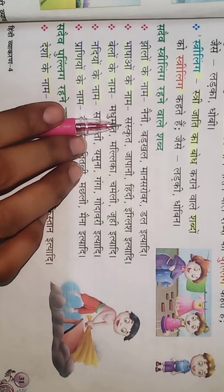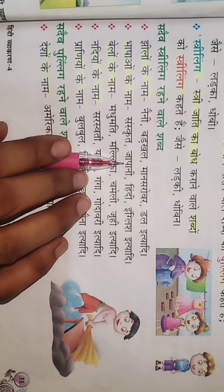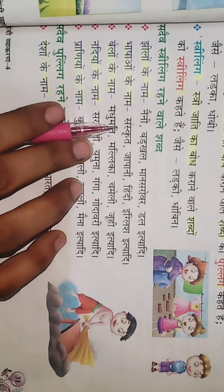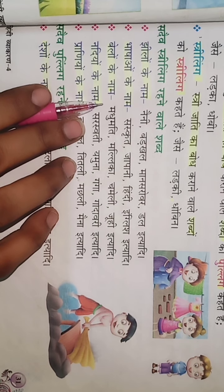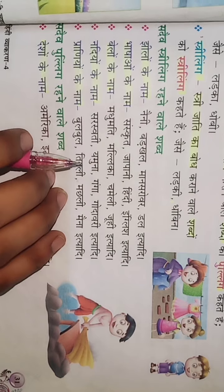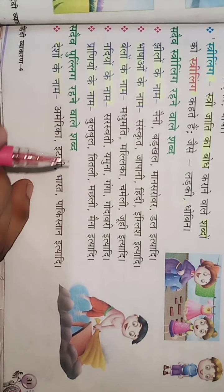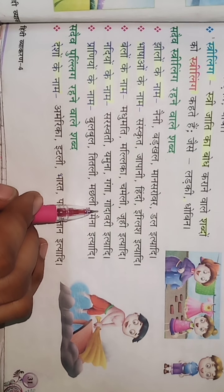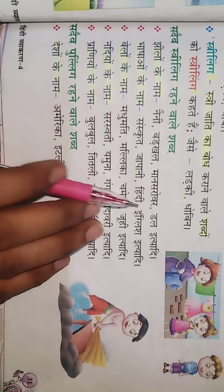Bhashaon ke naam: Sanskrit, Japanese, Hindi, English — jitnye bhi hamari bhashaon ke naam hote hain, voh bhi hamesha Istri Ling ke antargat aate hain. Belon ke naam: jitni bhi belon ke naam hain, jaise Madhumati, Malika, Chameli, Juhi — unke naam Istri Ling mein aate hain. Nadiyon ke naam: Saraswati, Yamuna, Ganga, Godavari — yeh sab Istri Ling rehti hain. Jeevanon ke naam jaise bulbul, titli, machali, maina — yeh hamesha Istri Ling mein hi rehti hain.